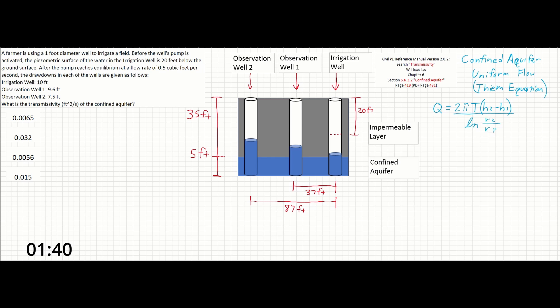T is going to be equal to the transmissivity, which is also equal to K times B, where B is the thickness of the confined aquifer, and K is the permeability of the confined aquifer.